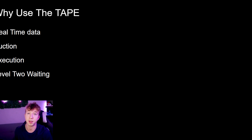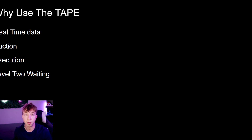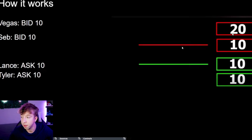Vice versa for the opposite direction, as you'll see in this video. On the execution side, you'll see orders in real time with live examples for time and sales. We're also going to go over Level 2. Level 2 shows orders waiting to be executed, versus time of sales which shows orders already being executed.